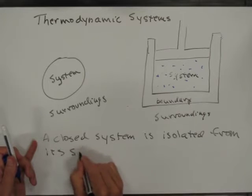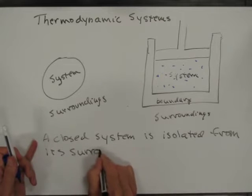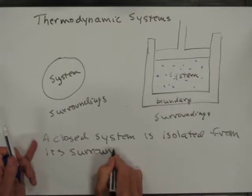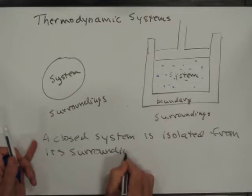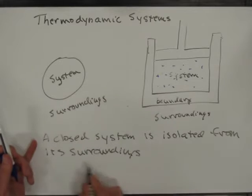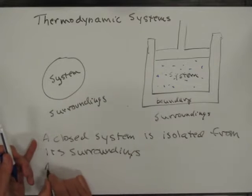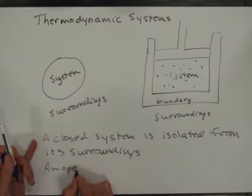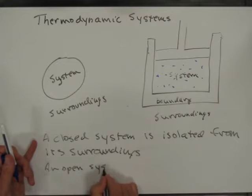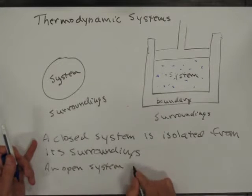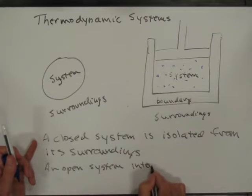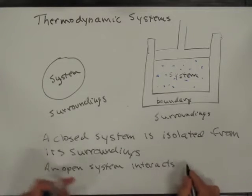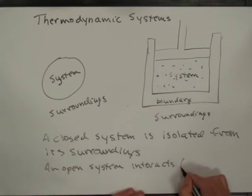A closed system is isolated from its surroundings. An open system interacts — usually that means it exchanges energy.